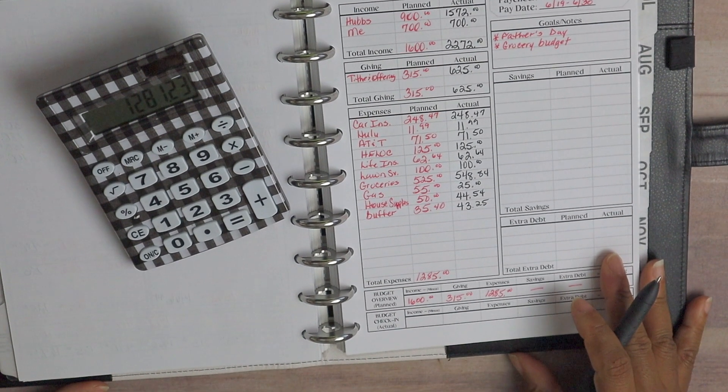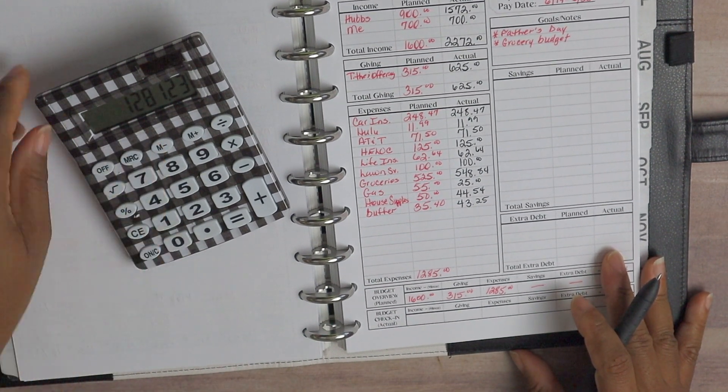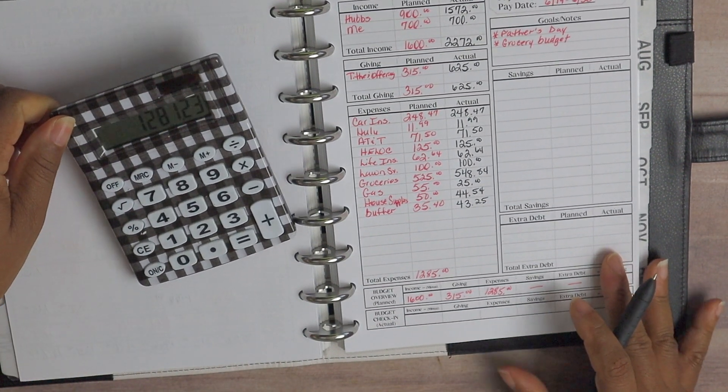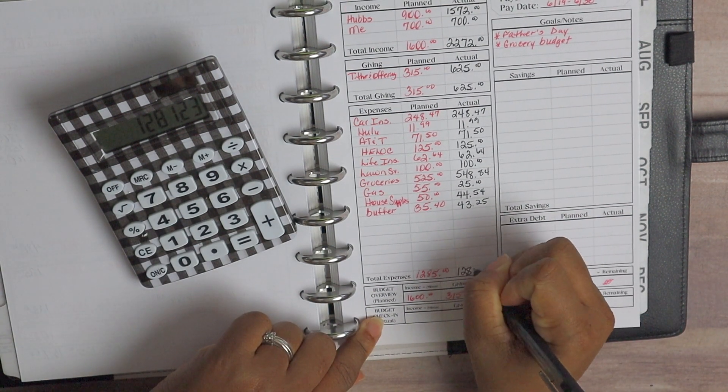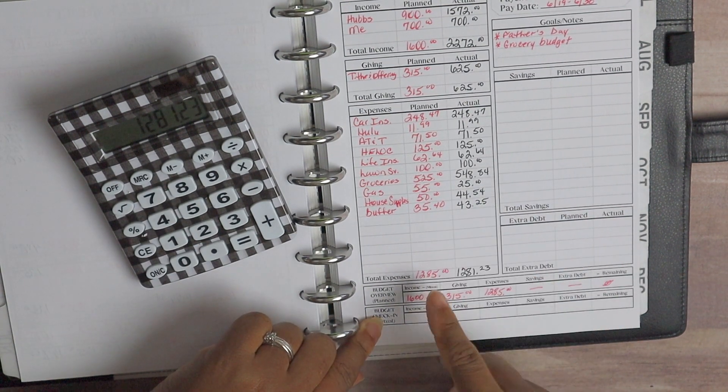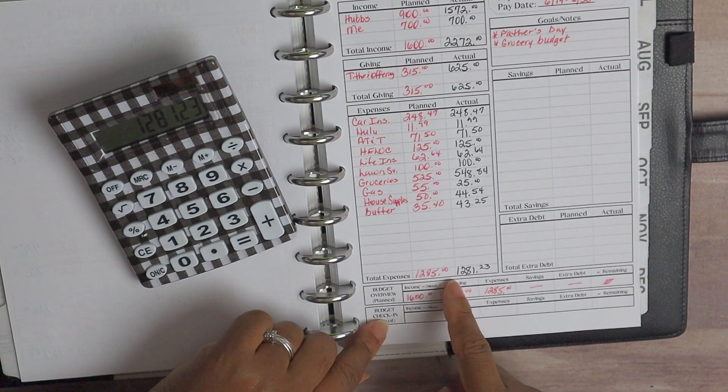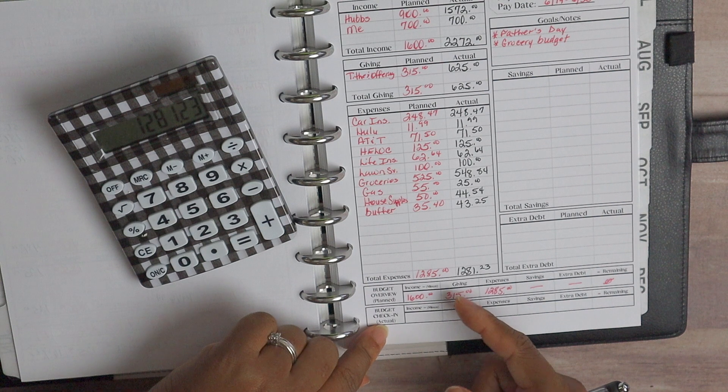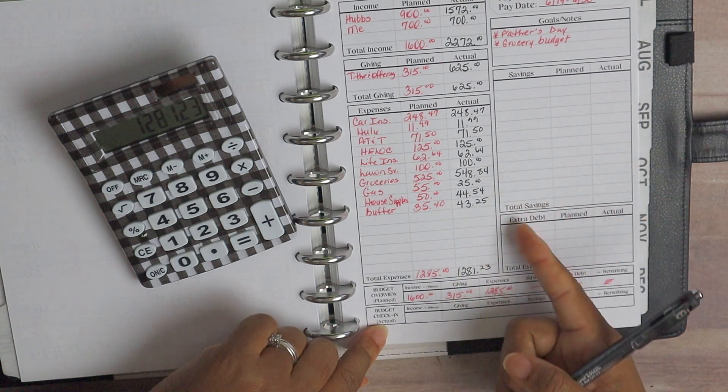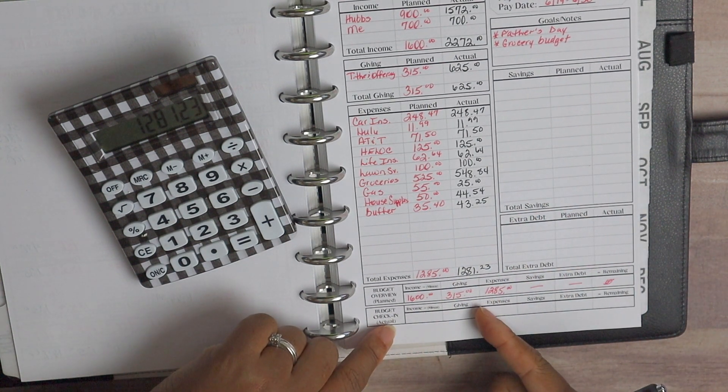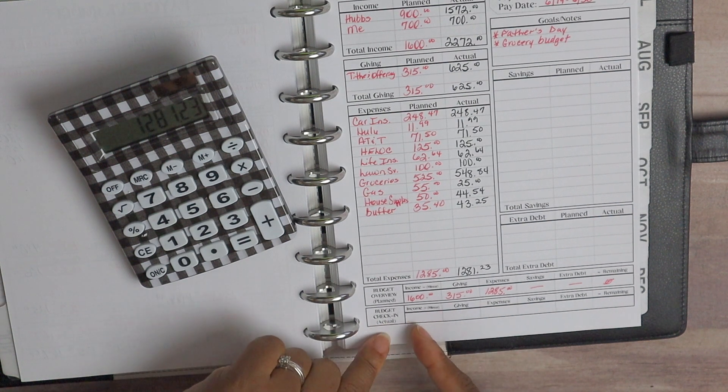All right, so we have come in at a total of $1,281.23, so we have gotten really close to our planned amount guys. We're not over, but that is really close. So we didn't have anything for savings and extra debt because that was done on paycheck budget number one. All right, so let's crunch these numbers down here in our budget check-in.